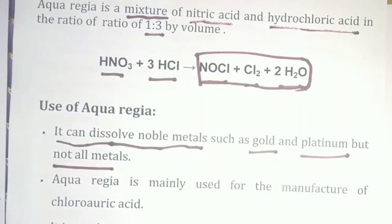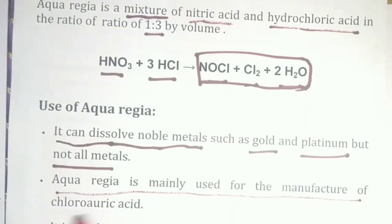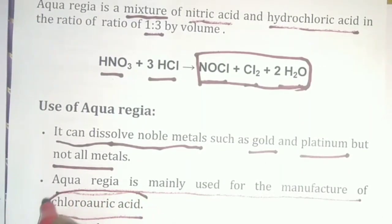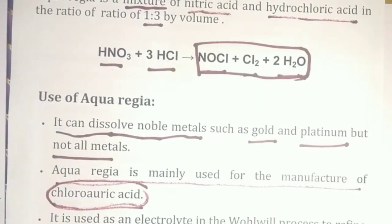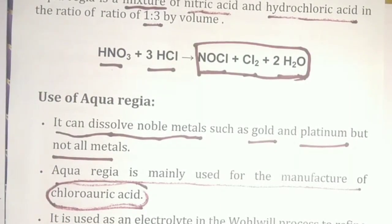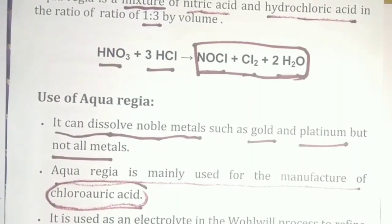This is called Aqua Regia. Aqua Regia is mainly used for the manufacture of chloroauric acid. Chloroauric acid is used as an electrolyte. This is the gold refinery process — the method for 99.99% gold purification.